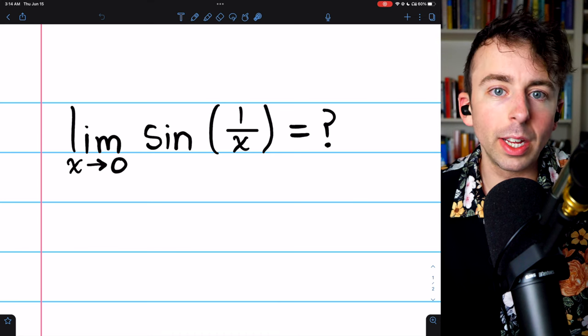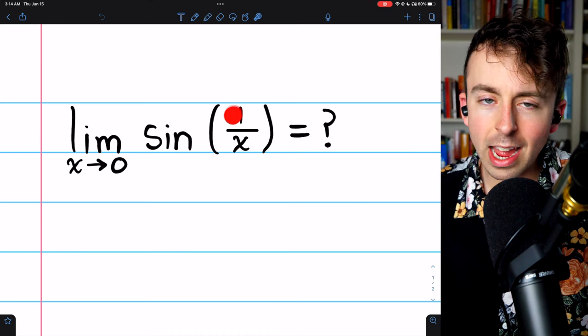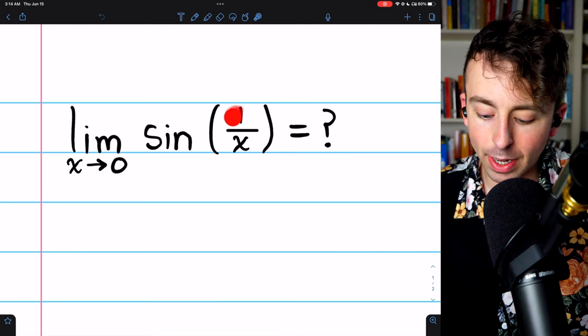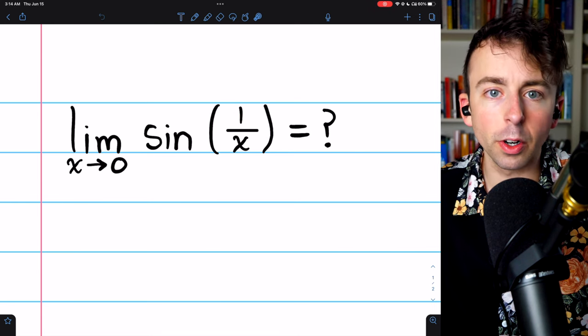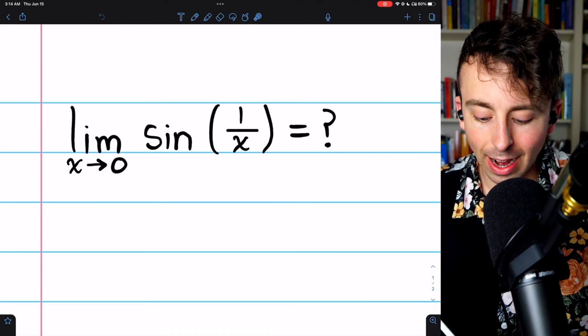If you have a function with a function inside of it, think about what's happening to the inside function first. In this case, 1 over x, as x goes to 0,